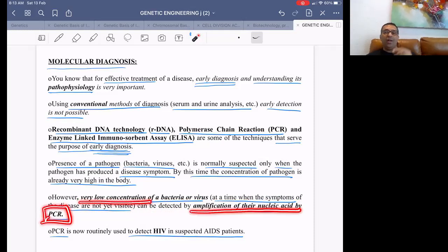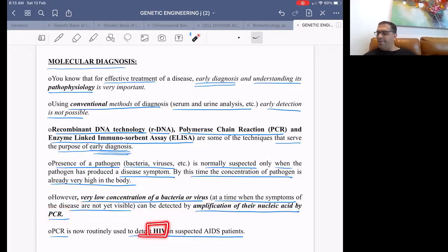A very low concentration of the virus when symptoms of the disease are not yet visible can be detected by amplification of their nucleic acid by PCR. Agar patient ke blood mein thoda bhi HIV hai, PCR ki maddad se HIV ka RNA amplify ho jayega and we will be able to detect the disease at a very early stage.